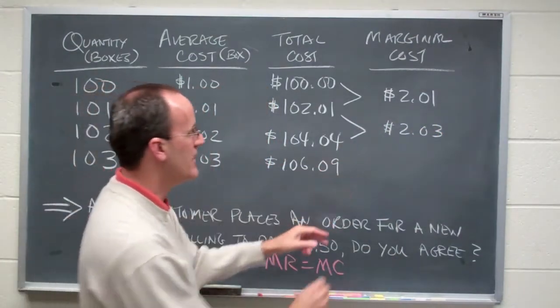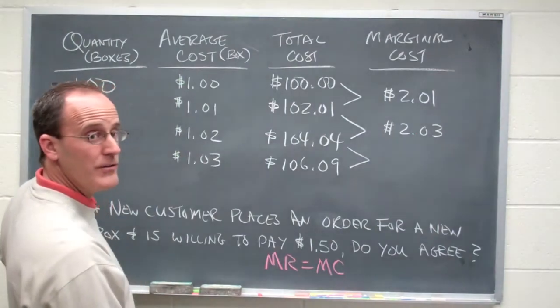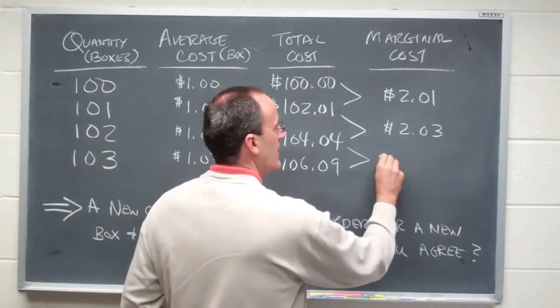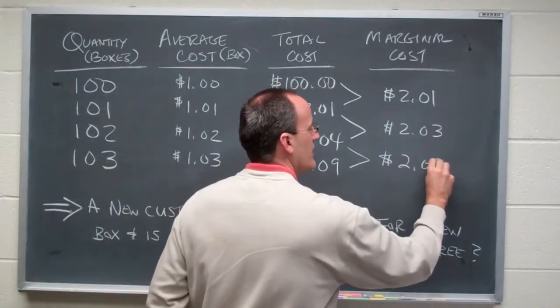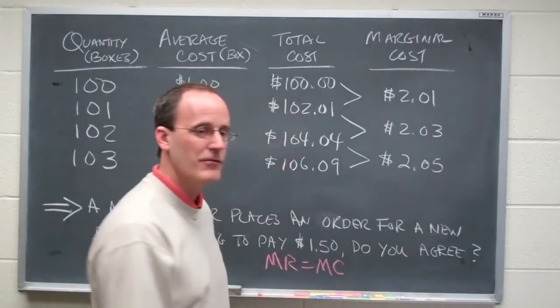And that would be two dollars and three cents. Then finally we can take the increase here as well as we go from 102 to 103. And the marginal cost of that box is two dollars and five cents.